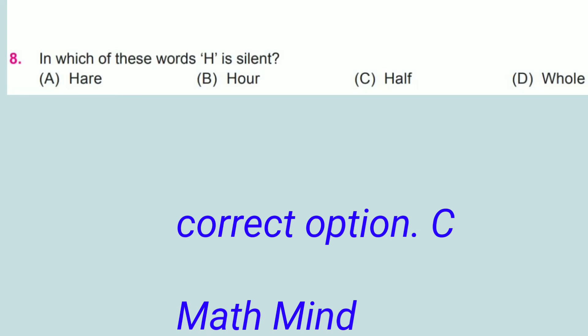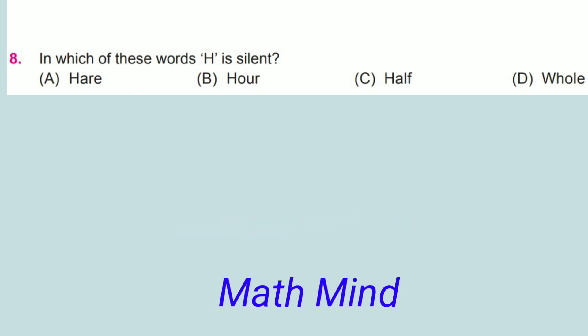Question number 8: In which of these words is H silent? Option A, here; option C, half; option D, whole; but option B, our - here H is silent. Hence, option B is correct.